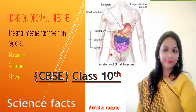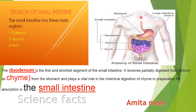On your screen you can see the duodenum, jejunum, and ileum. This is the large intestine. To review the anatomy of the small intestine: this is the duodenum, jejunum, and ileum making up the small intestine, along with the stomach. The small intestine has divided into three parts — the yellow part is called duodenum, the blue part is called jejunum, and the pink part is called ileum.